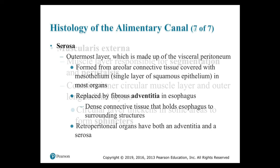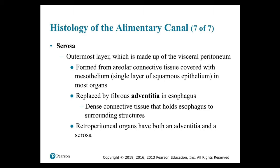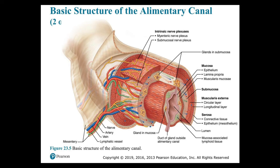The serosa: along most portions of the digestive tract inside the peritoneal cavity, the muscularis externa is covered by a serous membrane known as the serosa — made up of the visceral peritoneum, formed from areolar connective tissue covered with mesothelium. It is replaced by a fibrous adventitia in the esophagus. Retroperitoneal organs have both an adventitia and a serosa. Looking at figure 23.5, you can see the connective tissue and the layer of mesothelium in the serosa, as well as the intrinsic nerve plexuses.